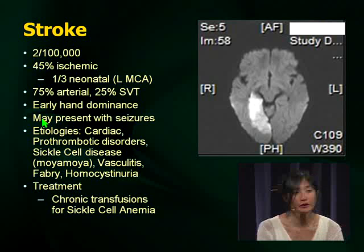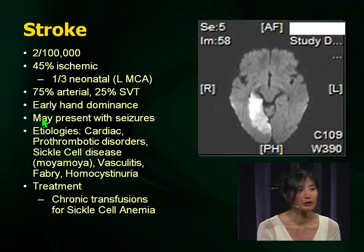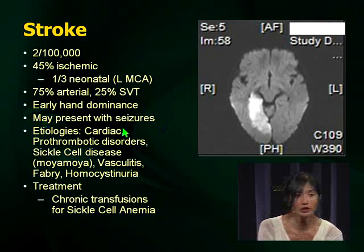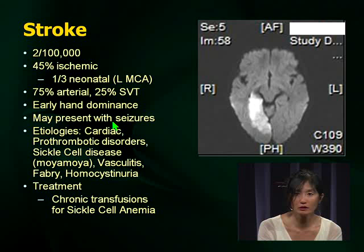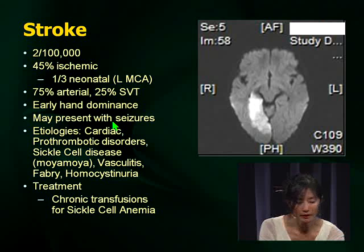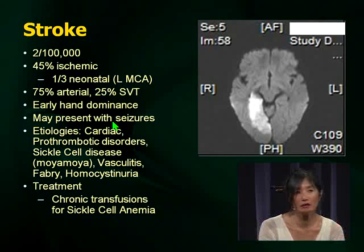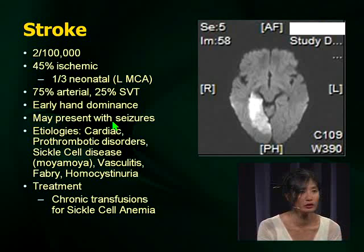In terms of acute stroke in childhood, unlike in adults, one of the most common presenting symptoms is seizures. If you get a scenario with a child presenting with a seizure and then weakness on one side, and you're given the choice of stroke versus Todd's paresis — Todd's paresis is a diagnosis of exclusion. Don't choose Todd's paresis until you're absolutely sure there's no focal ischemic injury. For imaging, you want an MRI and a DWI — a diffusion-weighted image — which will show you whether there's been a stroke.